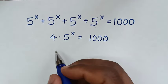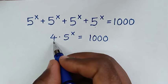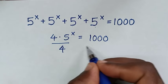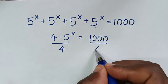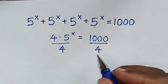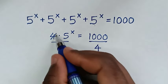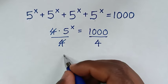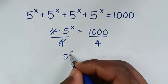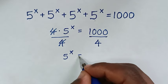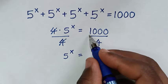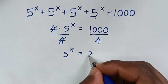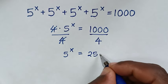In the next step we will divide by 4 on both sides. This 4 and this 4 will cancel, so it will be 5 power of x is equal to 1000 divided by 4, which is 250.